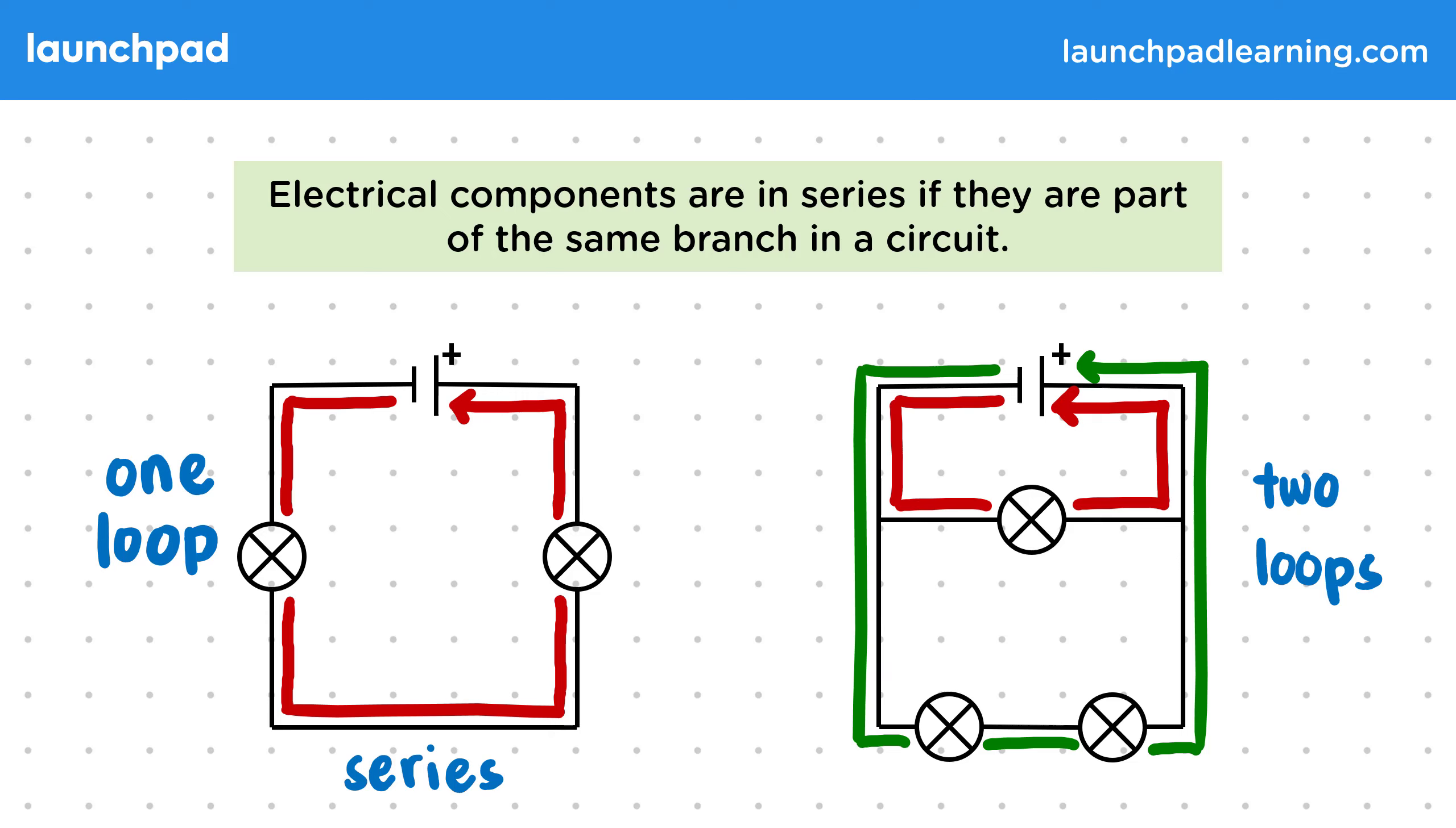Then since the two lamps at the bottom are on the same branch and loop we either travel through both of them or neither in a path around the circuit. So they are in series.